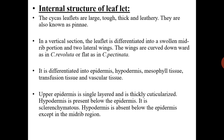Next comes the internal structure of the leaflet, which is important for practical purposes as well. The Cycas leaflets are large, tough, and thick-leathery — they are also known as pinnae. In vertical section, the leaflet is differentiated into the midrib portion and two lateral wings. The wings are curved downward in Cycas revoluta or flat as in Cycas pectinata. The leaflet is differentiated into epidermis, hypodermis, mesophyll tissues, transfusion tissues, and vascular tissues.